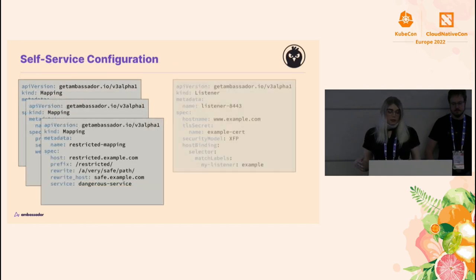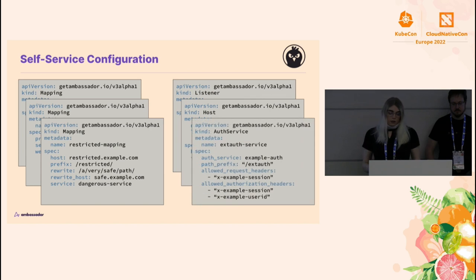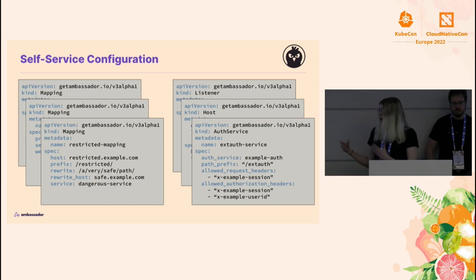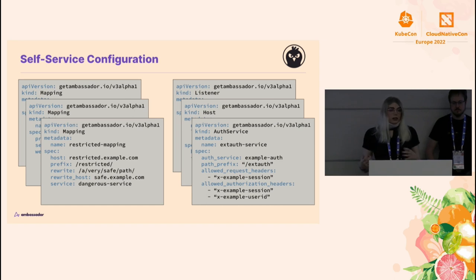The self-service point means that any one developer can do this as they need it and focus on pieces bit by bit. When auth is particularly relevant to you, you can start creating auth service resources. You can configure hosts and listening to control how traffic gets into the cluster, and when you're ready to get it sent to your upstream services, you can just focus on the mappings.